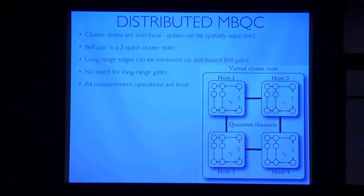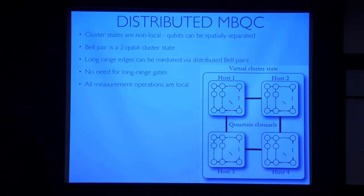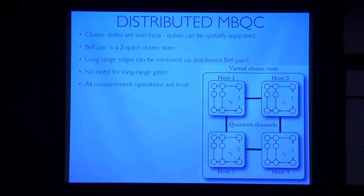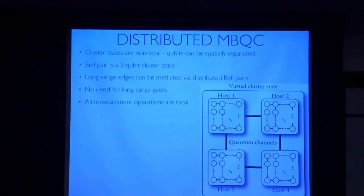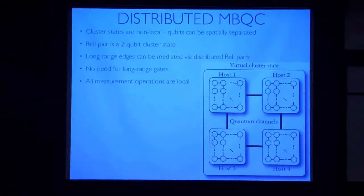This model for quantum computing lends itself really well to explaining distributed quantum computing. Imagine we have a bunch of hosts, each with a small cluster state — a square cluster state. They share quantum channels between them. If that quantum channel facilitates a controlled phase gate, then in a patchwork style we can join these smaller micro-clusters together to make one big virtual cluster state, which is much bigger. We don't need any long-range gates, and all the measurement operations are completely local.